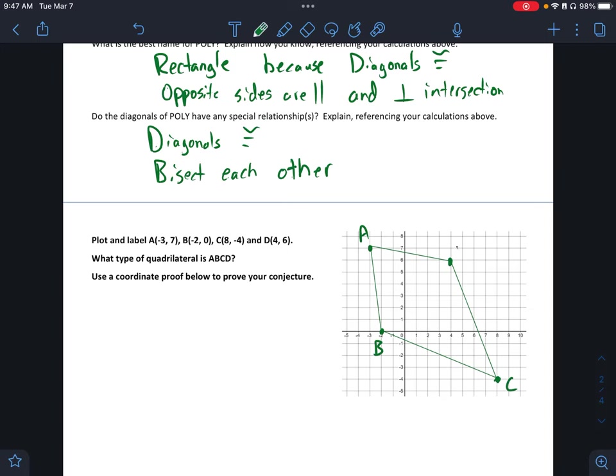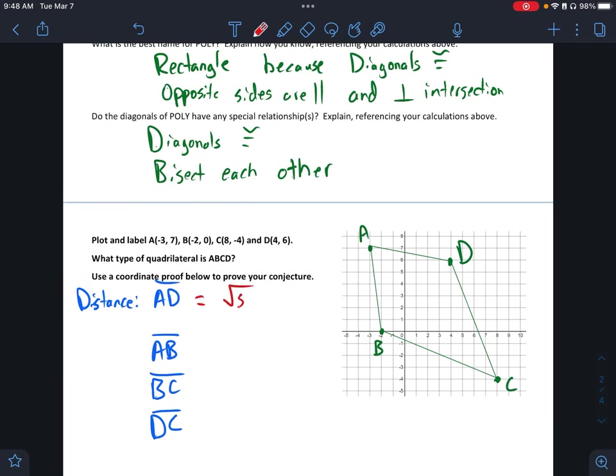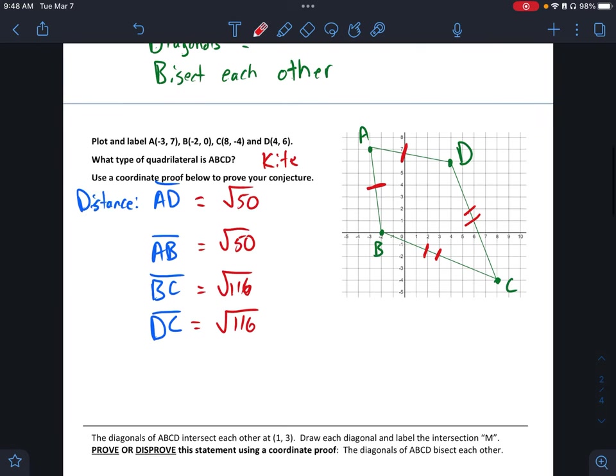So what I did is I started, that one is D, by finding the distance of each. So I found the distance of AD, the distance of AB, the distance of BC, and the distance of DC. And again, I'm not going to go through finding the distance for all of those, but I got square root 50, square root 50. Those two are the same. This one's square root 116, and this one's square root 116. I didn't calculate those as decimals. I left them. But what that tells me is I know these two are congruent, and these two are congruent. So I know then that this is a kite, because I have consecutive sides that are congruent.